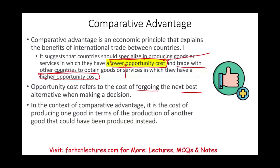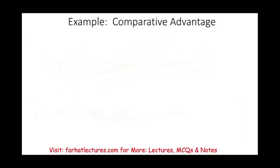In the context of comparative advantage, the cost of producing one good is measured in terms of what else could have been produced instead — what you give up. The best way to understand this is to work through an example.